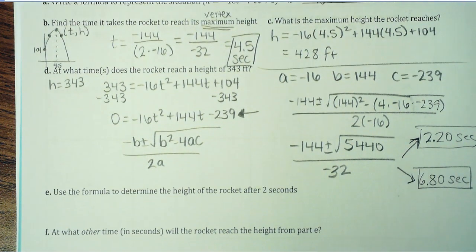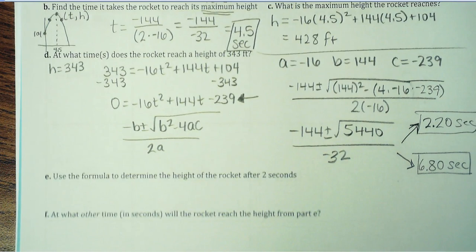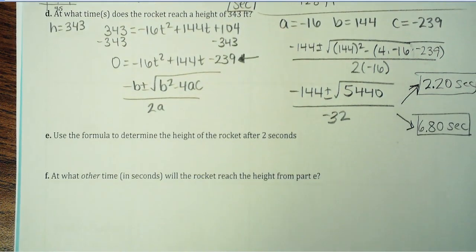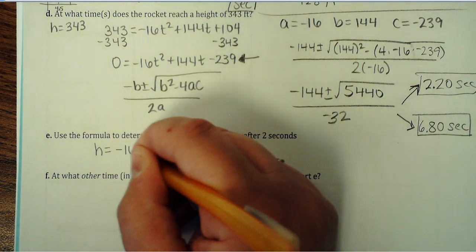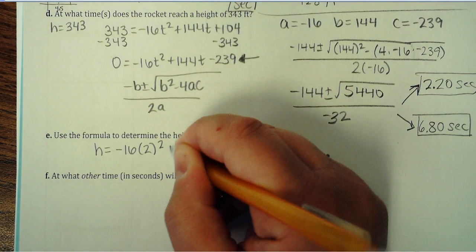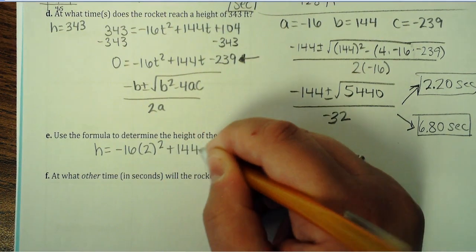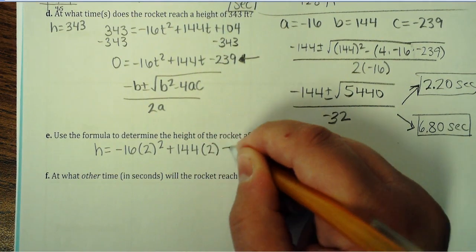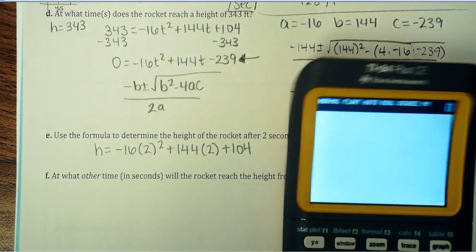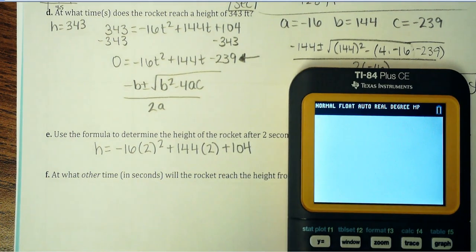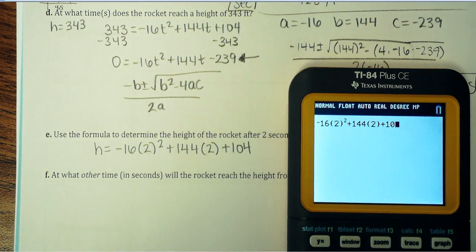The question underneath this says: use the formula to determine the height of the rocket after 2 seconds. This is a bit more of a review question — it's just giving you 2 seconds as the time. So everywhere you see a t, just go ahead and replace it with 2: negative 16 times 2 squared plus 144 times 2 plus 104. That gives us 328 feet.